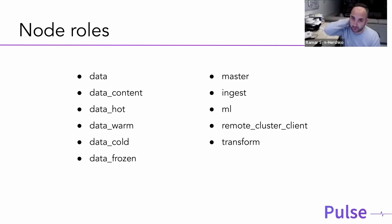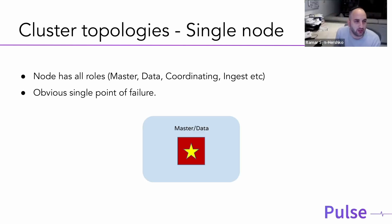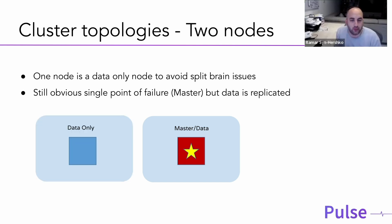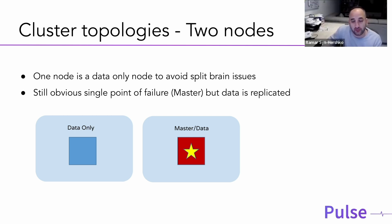If you want to run ingest-heavy pipelines, you may want to create ingest-only nodes and remove the ingest role from data nodes. Node roles in OpenSearch work such that if a node has a role, it can execute specific tasks. By default, every node you run will have all roles assigned. Adding another data node allows data replication between two nodes, removing a data failure point.